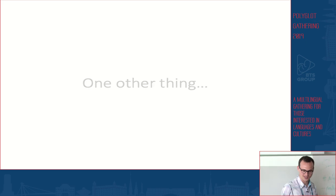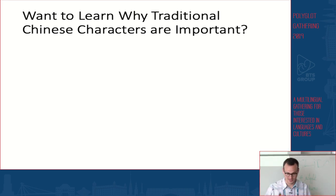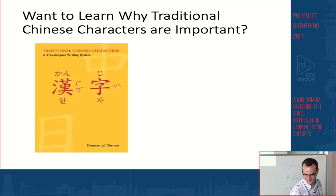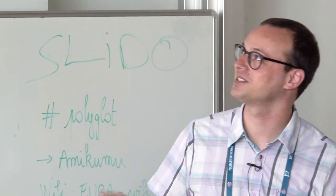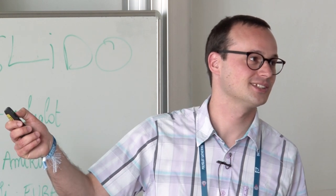One more thing: traditional Chinese characters act as a common denominator between all the languages of the Sinosphere — Chinese, Japanese, Korean, and Vietnamese. They're fundamental when learning these languages, especially when learning many of them simultaneously. If you want to learn why, I recommend the book I've just published, titled 'Traditional Chinese Characters: A Translingual Writing System,' available on Amazon in the US, Canada, UK, Germany, France, Spain, Italy, and even Japan.